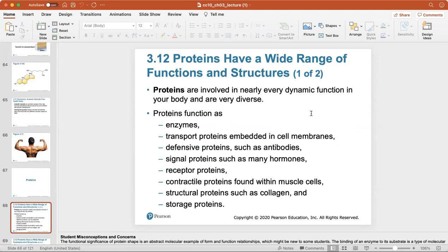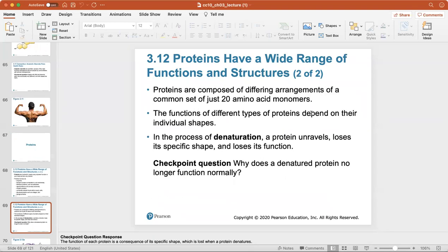Proteins are involved in nearly every dynamic function in your body. They're extremely diverse. They can be enzymes, transport proteins embedded in the cell membrane, antibodies, signal proteins like many hormones, receptor proteins, contractile proteins found in your muscles, structural proteins like collagen, and storage proteins. Proteins are composed of differing arrangements of a common set of 20 amino acid monomers. The functions of different types of proteins depend on their individual shapes. In the process of denaturation, a protein will unravel, lose its specific shape and lose its function. Why does a denatured protein no longer function normally? Because the shape of the protein is directly related to its function. Denaturation usually is caused by an increase in temperature or too much acidity, and if that causes the protein to lose its shape, it won't work anymore.